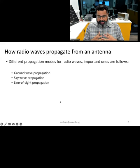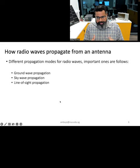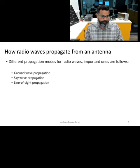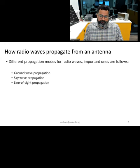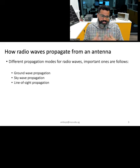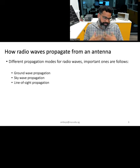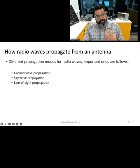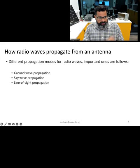After modulating a carrier signal and converting it into an electromagnetic wave, the next step is understanding how the signal propagates from the antenna — from a transmitter to a receiver. There are three distinct modes of radio wave propagation that we are going to study: ground wave propagation, sky wave propagation, and line of sight propagation.